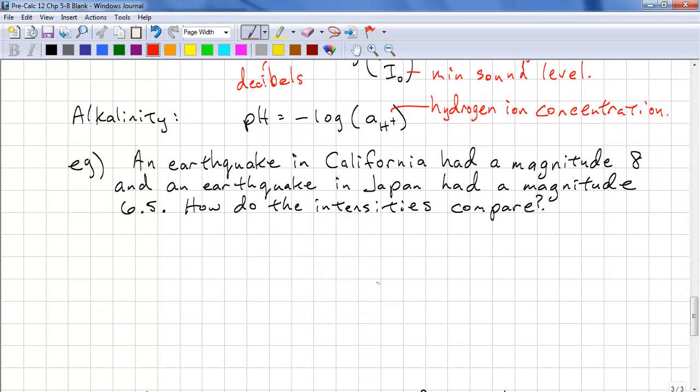Fortunately these are fairly straightforward to solve. So we have the magnitude of the California earthquake equals log intensity of the California earthquake over S, your standard earthquake. So this is 8 equals log IC over S, and we get 10 to the power of 8. We exponentiate both sides to the base of this logarithm, which is 10, and we get IC over S. So IC equals 10 to the power of 8 times S.